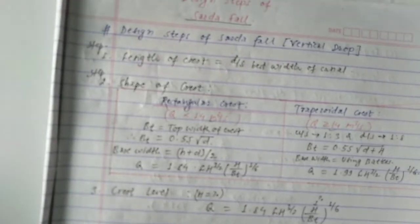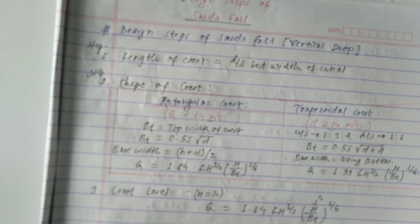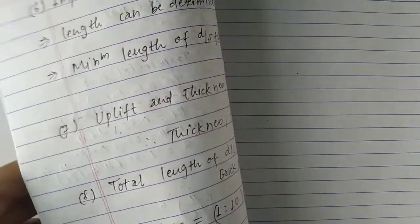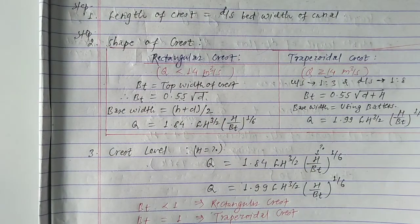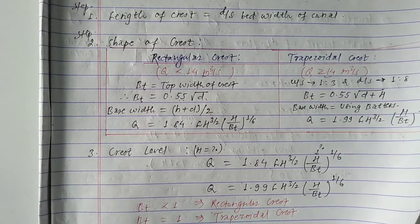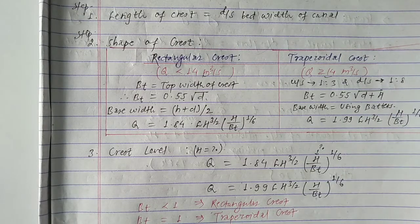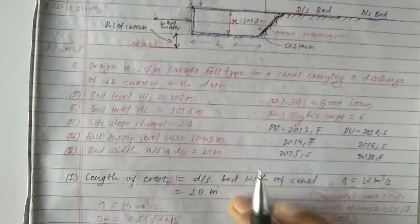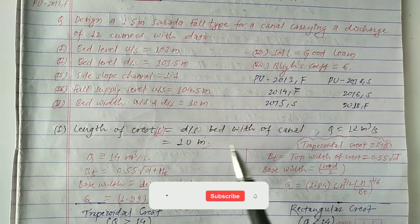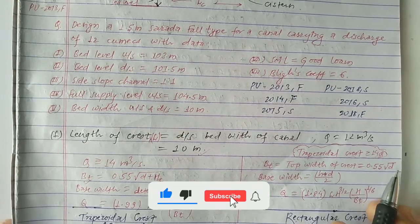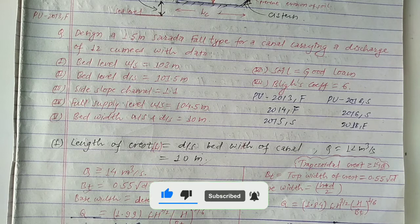So these are all eight design steps of Sarda Fall. Using these steps, we can easily design a Sarda Fall. Now let's look at a numerical example related to the design of Sarda Fall, following all these steps. We have a given numerical problem here, and we will solve it using all eight steps.